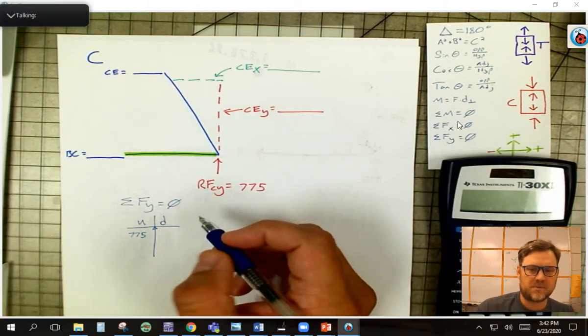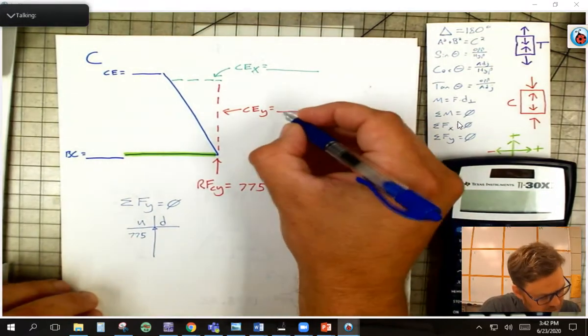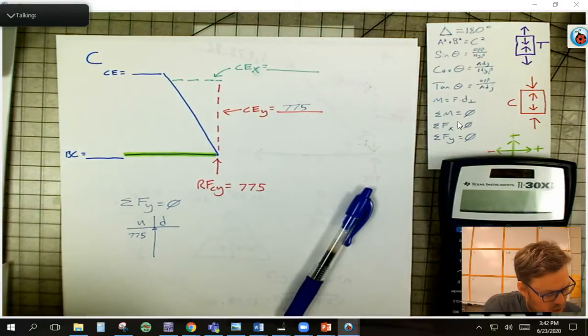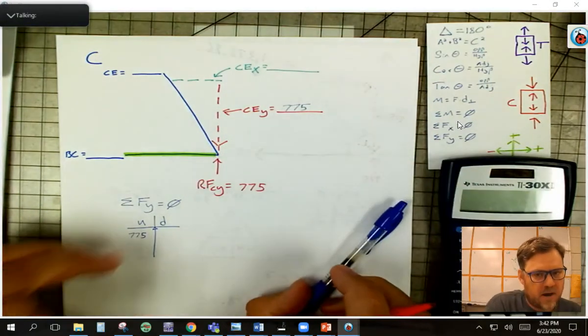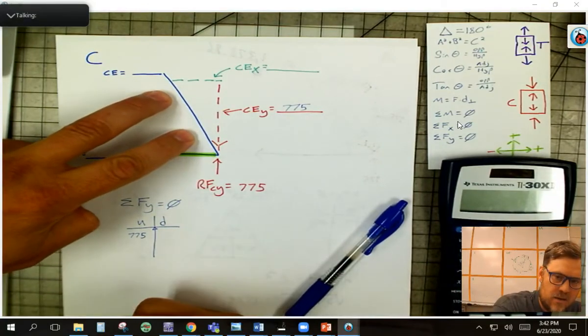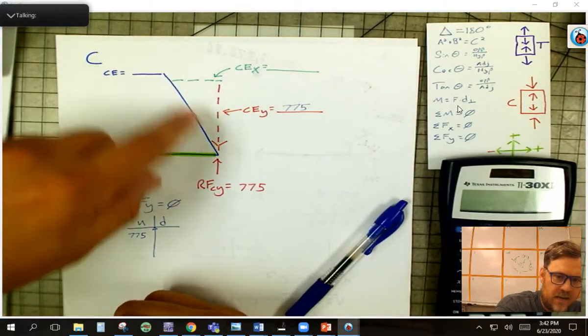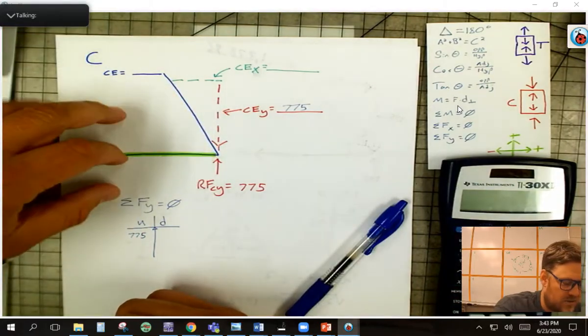so they have to be equal and opposite. They have to be equal and opposite. So I know right then that CE in the Y has to be equal to 775, and it has to be going down. Now, it's really important to keep up with your arrows here. Now, let's look at line segment CE. It's either going down and to the right or up and to the left, and if I know the Y component's going down,